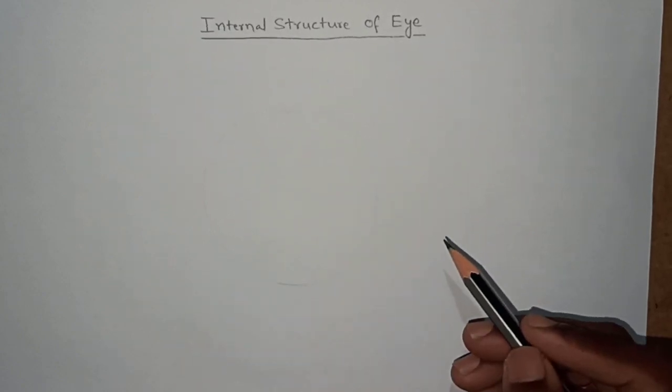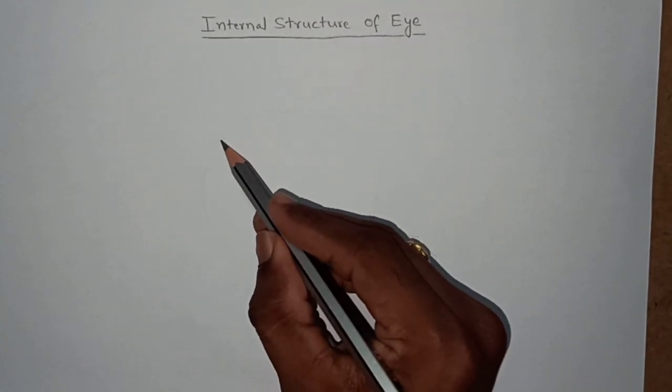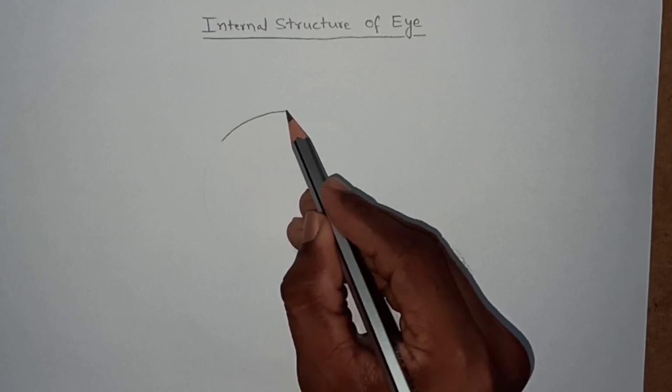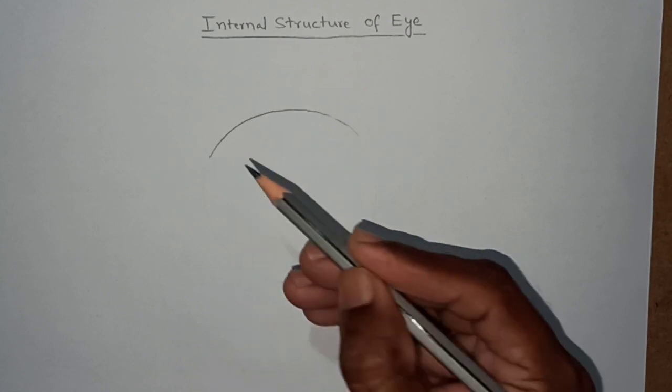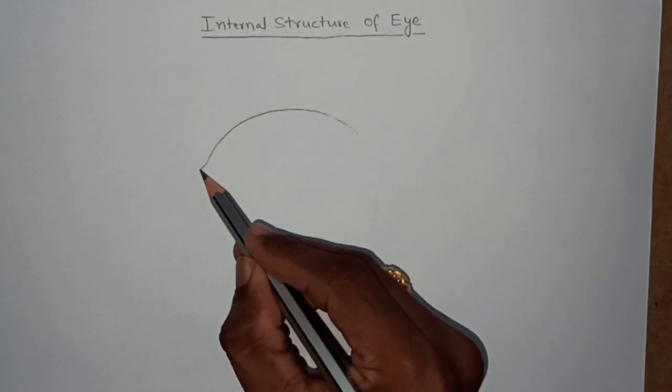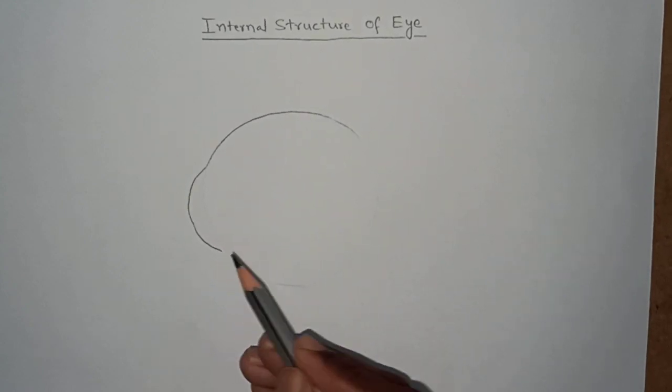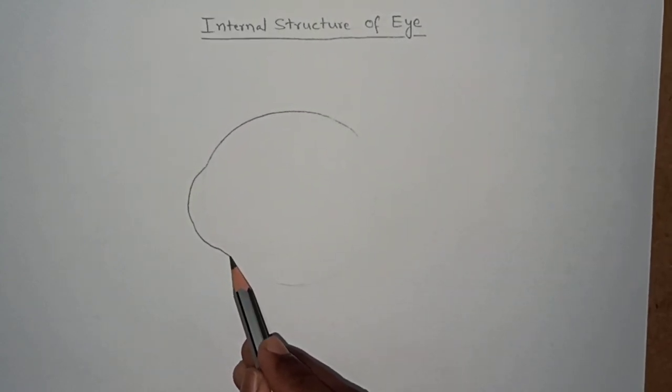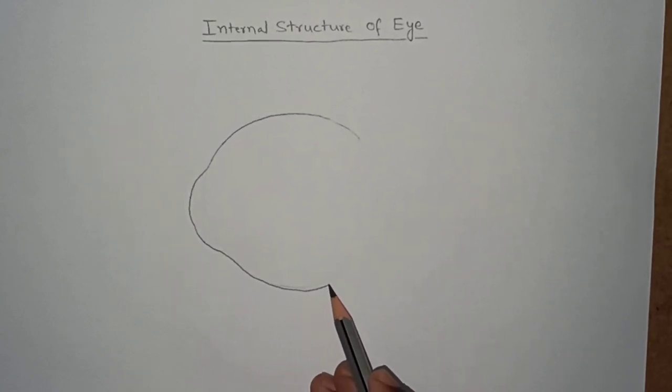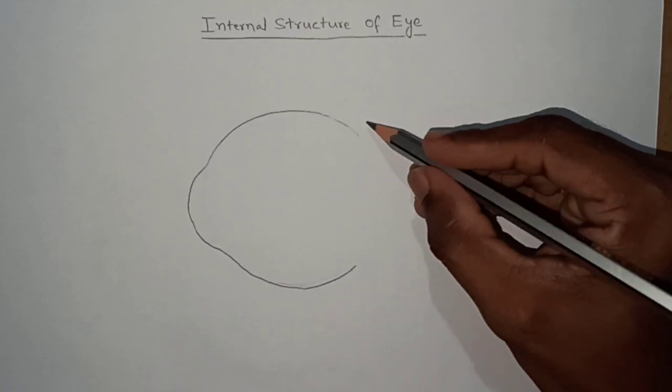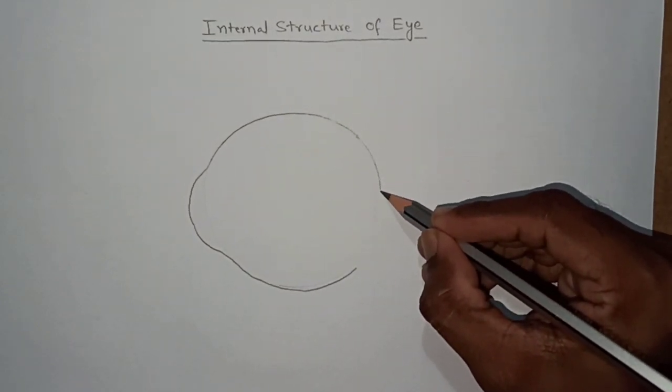The outermost layer, sclera, we have to draw the sclerotic layer. And the sclerotic layer sclera bulges at the front portion like this. So now we are drawing the sclerotic layer.